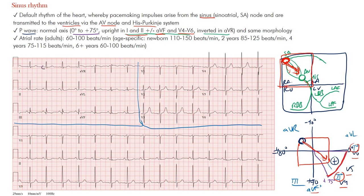Let's look at the P waves. In lead two they are more evident. You can see them in lead three — notice the direction. You can see them in AVF. The axis is probably closer to positive 75 degrees. On the left lateral leads, you can see some P waves — somewhat hard to make out, but they're there. And if you look at AVR, notice that AVR has negative P waves because the impulse is going away from this lead.